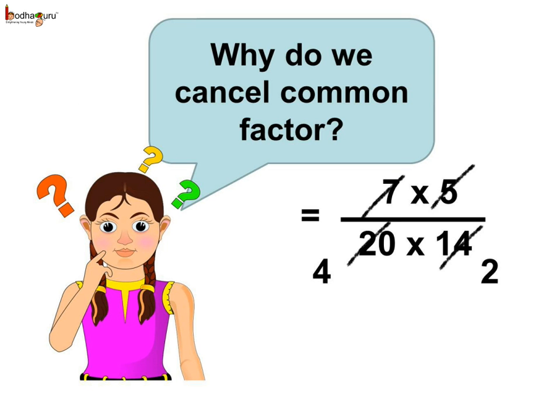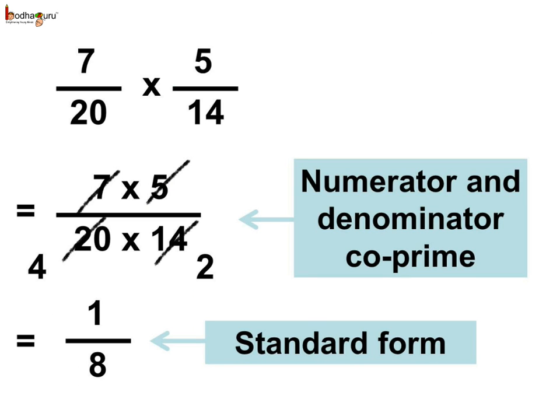Now you may ask, why do we cancel the common factors? If we cancel all the common factors from both the numerator and the denominator, meaning the numerator and the denominator have no common factors left, then that means the numerator and the denominator would be co-prime. Like here, 1 and 8 are co-prime, and so we get a rational number in the standard form.